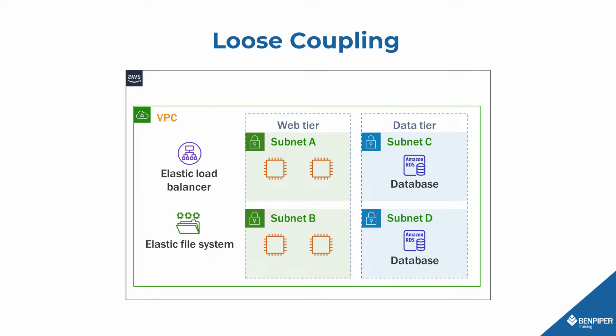Take another look at the diagram. Notice that the availability of our application doesn't depend solely on a single EC2 instance or a single database instance. Any one of these EC2 instances could go down, and the application will still work. But how? What is the magic that makes that possible? Users access the application by browsing to a particular URL. When a user goes to the URL for the application, they are not directly connecting to an individual instance.